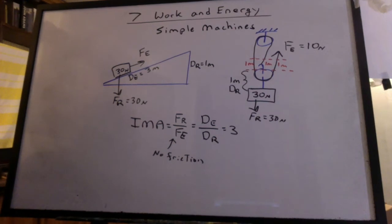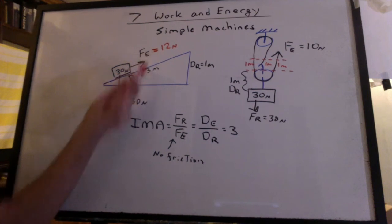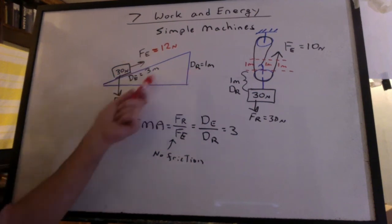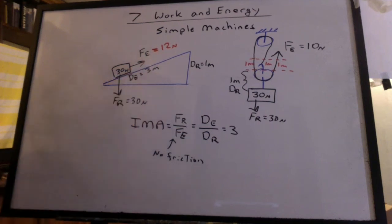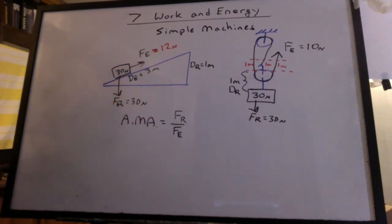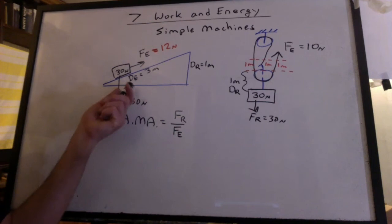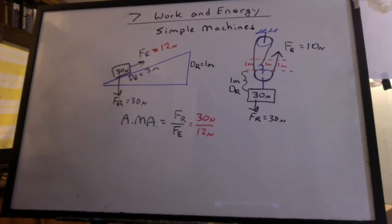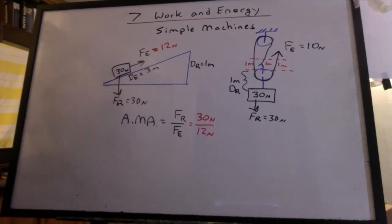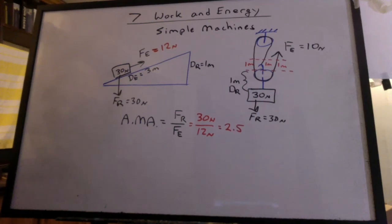So how do you know if there's friction in the problem? Well, if I told you that was 12 newtons, and you know the IMA is three by looking at the distances, well, then it's not 10 newtons, it's 12 newtons. There's got to be some friction here. So what's the actual mechanical advantage for this incline? We're lifting 30 newtons with just 12. So the AMA is 2.5. Ideally, it would be three.